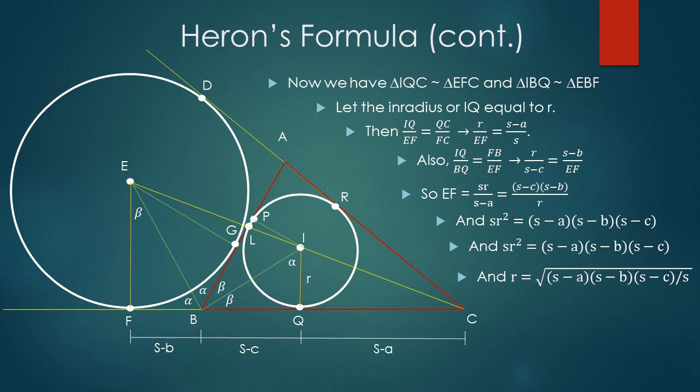Recalling that K equals rs and our new definition of r, we can conclude that the area of any triangle is equal to the square root of s times s minus a times s minus b times s minus c. And there you have it, Heron's formula broken down in a geometric way. Hope you enjoyed it. Thank you.